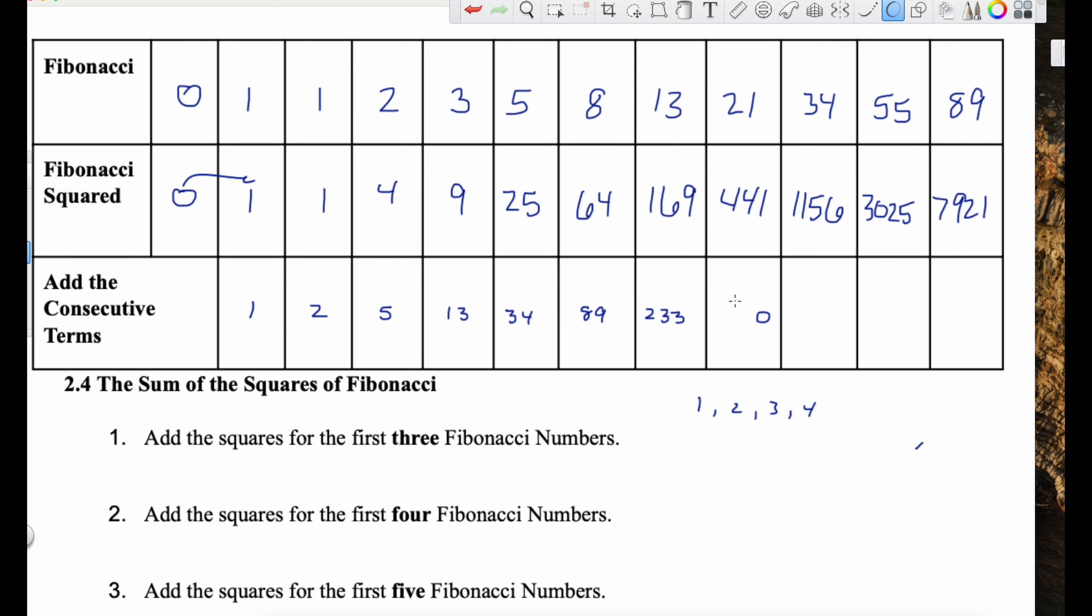So I asked you to, what do you get? So we did that, we found the square, we add the consecutive term, and what do we get? So what do we notice here? Well, one, let's just maybe write some of these down. One is a Fibonacci number. Two is a Fibonacci number.